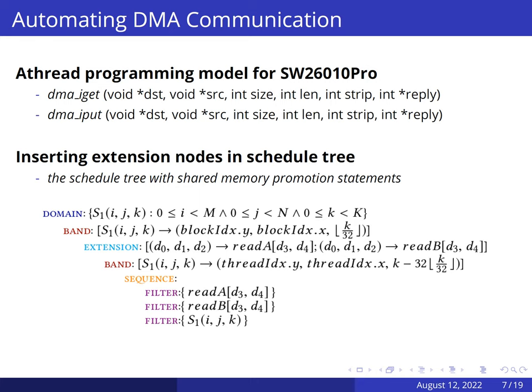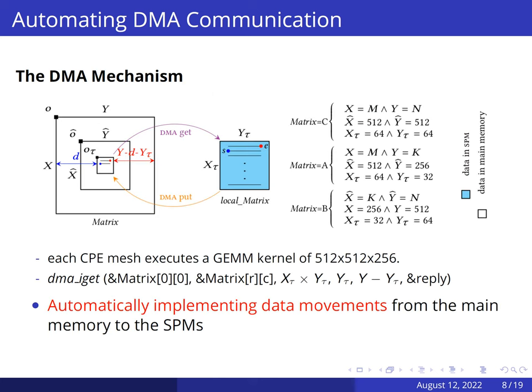So, the next step of our approach is to compute the values for each argument of the DMA syntax. After compute decomposition, all of the computing processing elements are distributed into an 8×8 mesh organization. We suppose that the matrix is of size x×y and the size of matrix executed by the compute mesh is x-height×y-width. How of these parameters are computed is listed here. If you are interested, you can go through our paper to gather details. By inserting DMA's domains in schedule tree, we automatically implement data movements from the main memory to the scratchpad memory of computing processing elements.